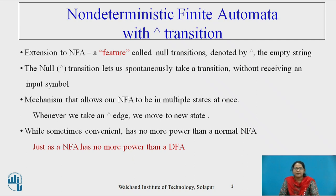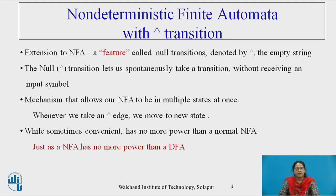Finite automaton, whether DFA or NFA, are characterized by transitions on a particular symbol. In deterministic finite automaton, there is exactly one transition for each and every input symbol. In non-deterministic finite automaton, there may be zero or more than one transition for an input symbol. DFA and NFA both accept the same type of regular language, and any NFA can be converted to DFA using the subset construction method.